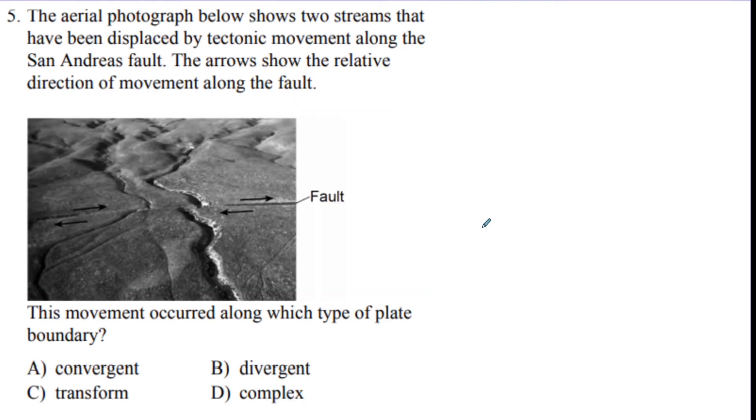Number five, the aerial photograph below shows two streams that have been displaced by tectonic movement along the San Andreas Fault. The arrows show the plate movement. What type of movement would this be? The arrows are going past each other. That is transform. So you can just check on the bottom of page 5 on the reference table to get that answer. Convergent, remember, is if they're going towards. Divergent is they're going away. Transform is if they're going opposite.